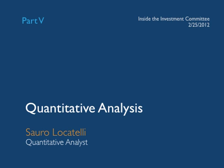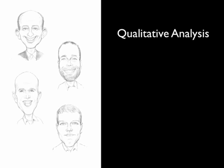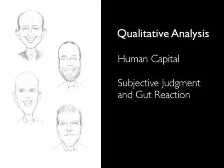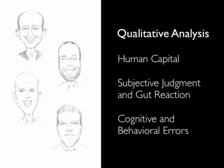It is easier to understand what quantitative analysis means when we put it in contrast with qualitative analysis, which is exactly what the members of our investment team do every day. What they do is they read reports, they follow the markets, they look at charts and numbers, and ultimately they come up with ideas and make investment decisions based on what they see. The main features of qualitative analysis are an investment that is predominantly in human capital, a process that involves a big deal of subjective judgment and gut reaction, and for this reason it is subject to a multitude of errors that are typical of the human mind.